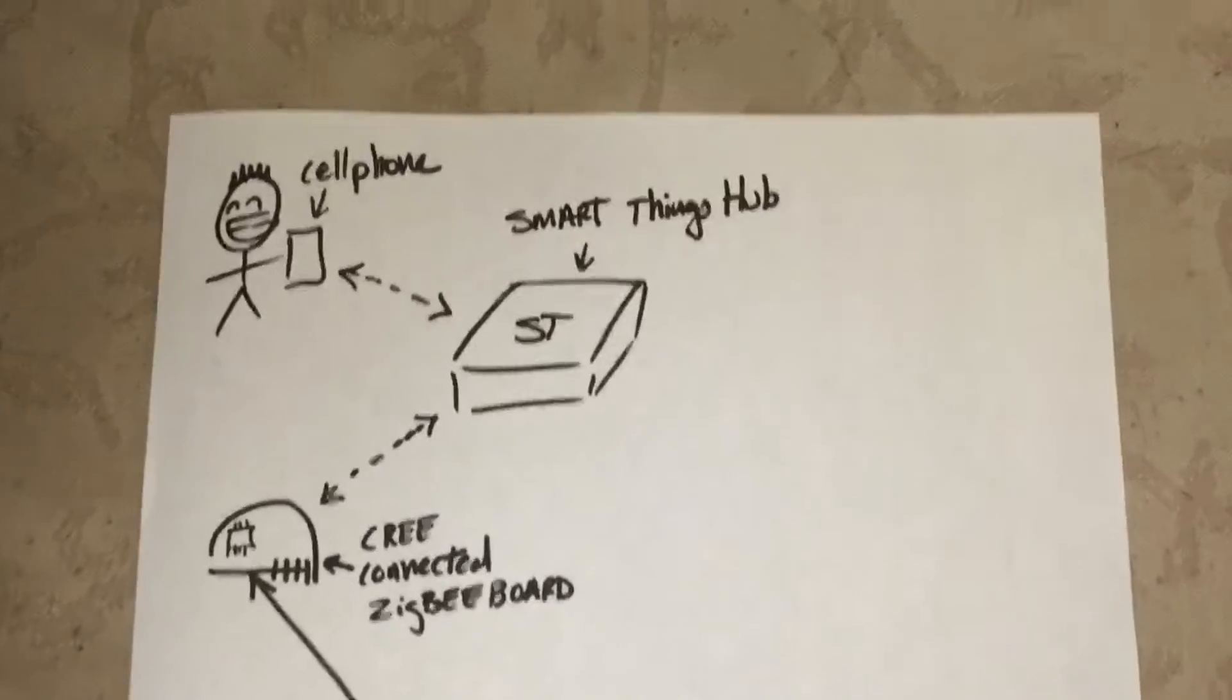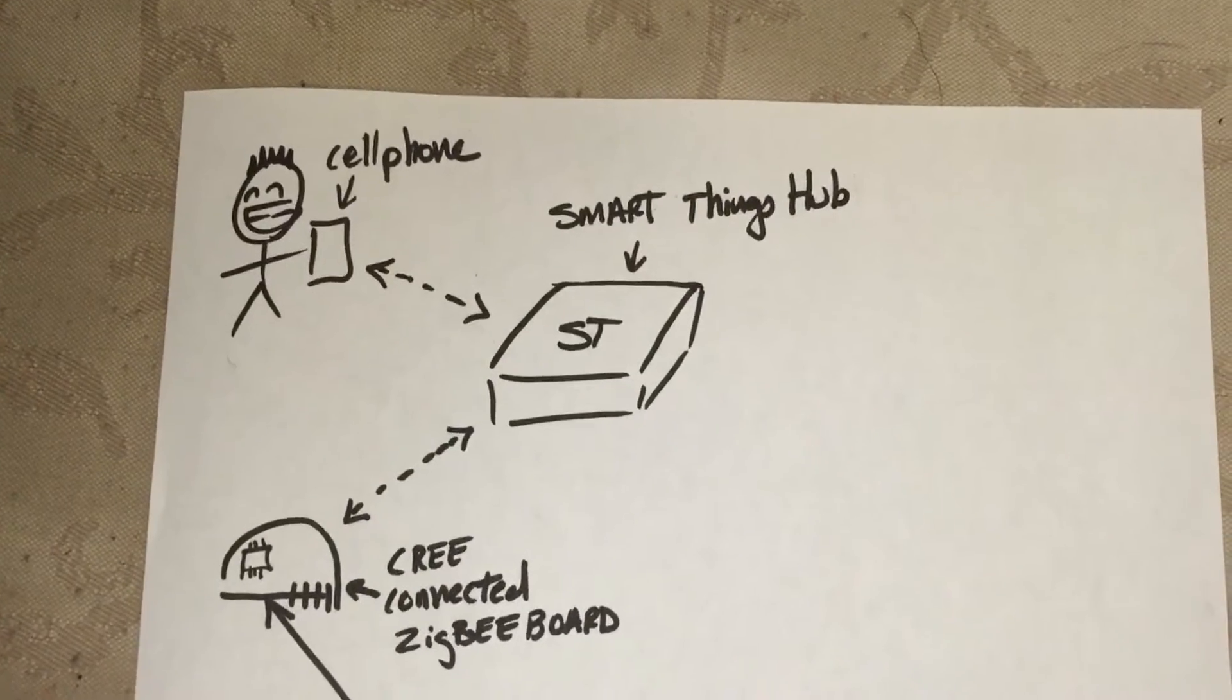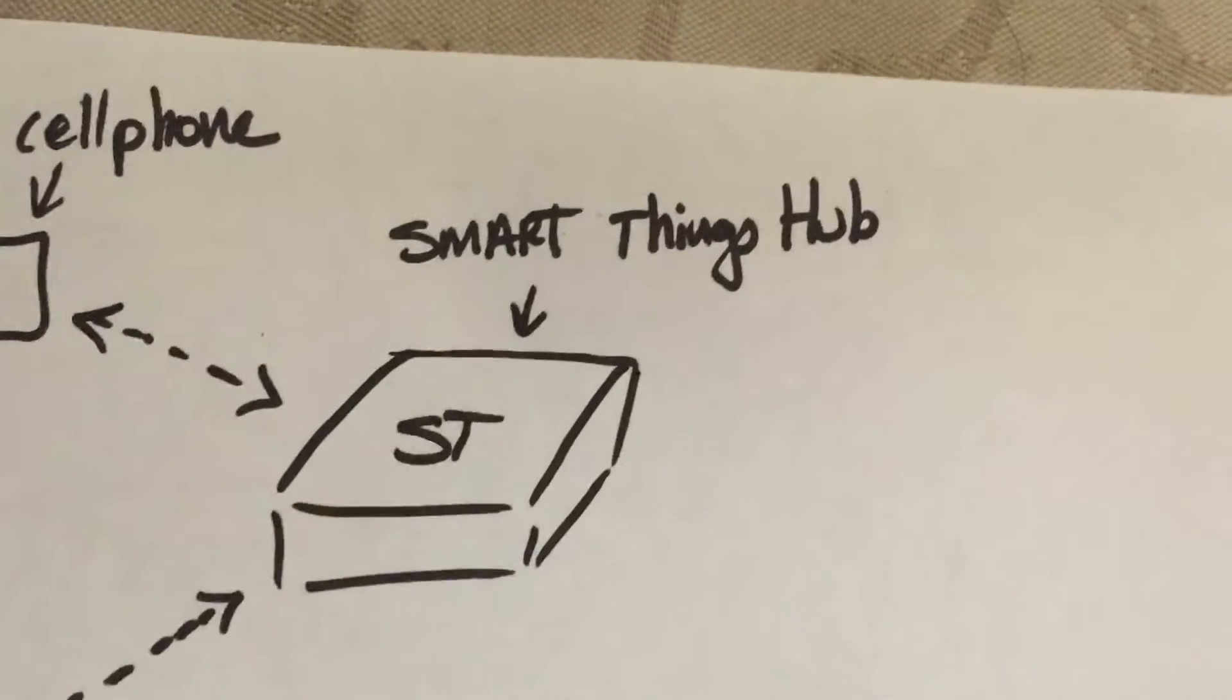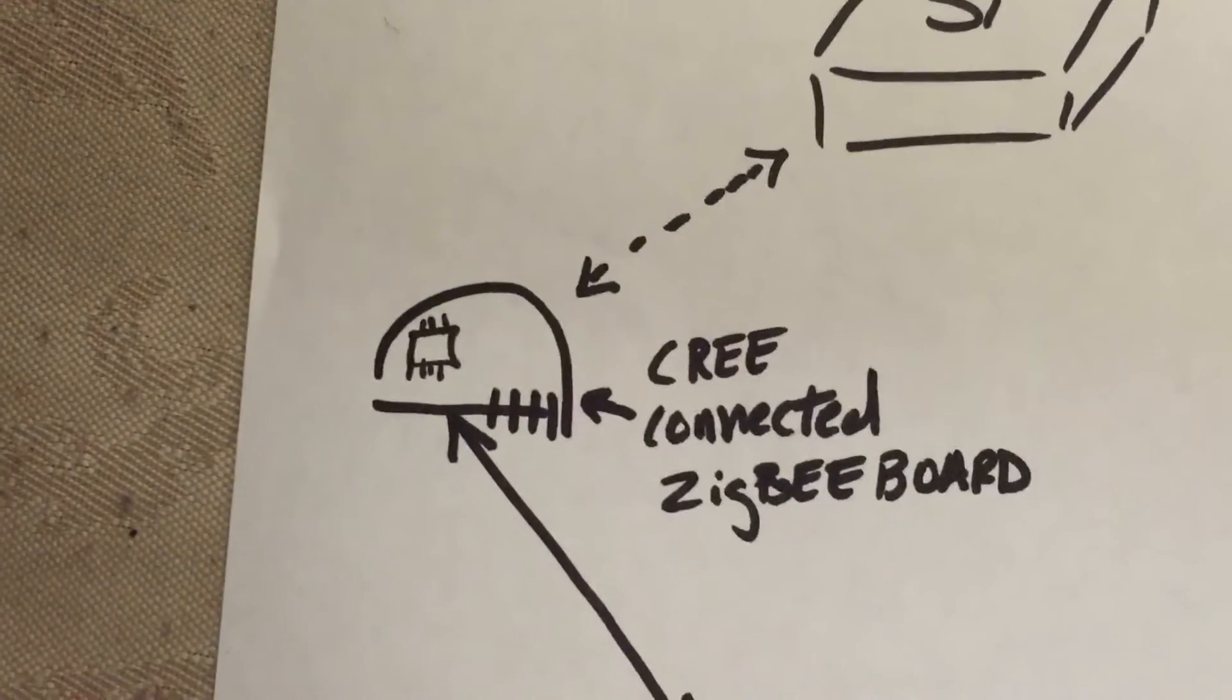All right, just a brief overview of what I'm going to be talking about. We got me and a cell phone and that talks wirelessly to the SmartThings Hub, which is pretty much the brains of the system. From the SmartThings Hub, it communicates wirelessly to the Cree connected Zigbee board.